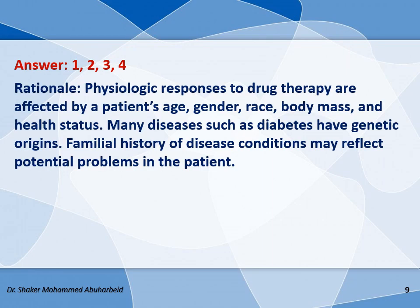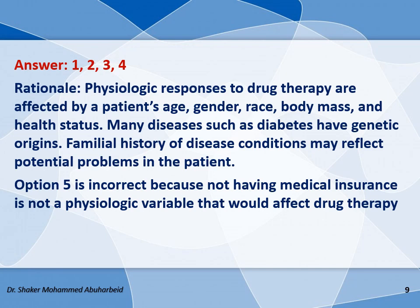Physiological responses to drug therapy are affected by a patient's age, gender, race, body mass, and health status. Many diseases such as diabetes have genetic origins, so a familial history of disease conditions may reflect potential problems in the patient. Option 5 is incorrect because not having medical insurance is not a physiological variable that would affect drug therapy.